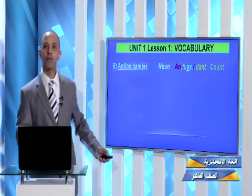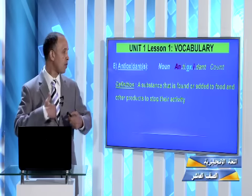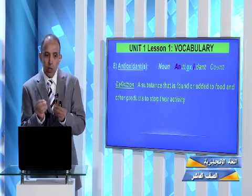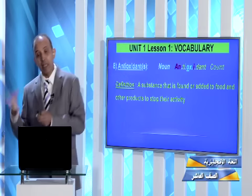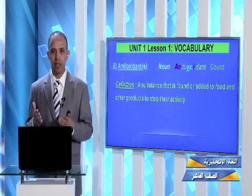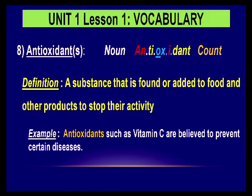What is an antioxidant? It is a substance found in the body or in other products — something we add to food or other products with the aim to stop harmful activity. As an example, vitamin C and all other vitamins and minerals are considered antioxidants, and they help the body fight diseases and infections.